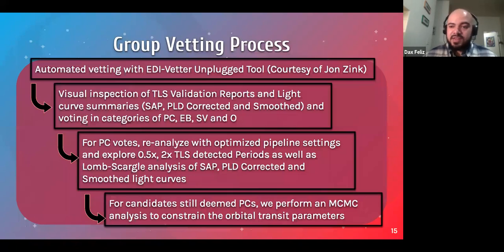So we also do a few rounds of group vetting. So like I just mentioned, we use the automated EDI vetter unplug tool. We do a visual inspection of these TLS validation reports and the light curve summary files, as I've shown before. And then we vote on these candidates and categories of planet candidates, eclipsing binaries, stellar variation, and other, in case something weird happened and we don't know what to call it. So for the planet candidate votes, we then reanalyze these systems with optimized pipeline settings for that system. And then we also explore the harmonics of the detected period, as well as doing a Lomb-Scargle analysis of the different versions of our light curves.